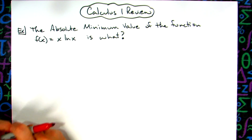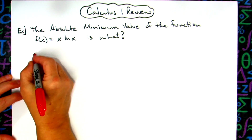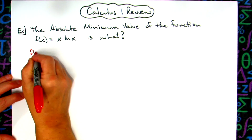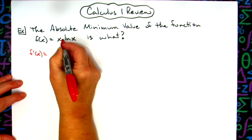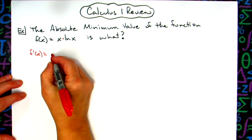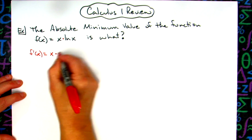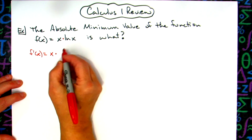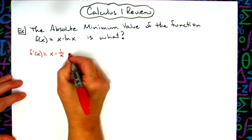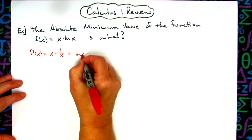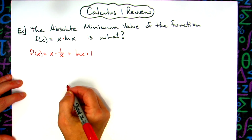The first thing you're going to need to do here is take the derivative of this function. So f'(x) is equal to — I've got product rule going on — so I'm going to have x times the derivative of the natural log of x, which is 1/x, plus the natural log of x times the derivative of x, which is 1.